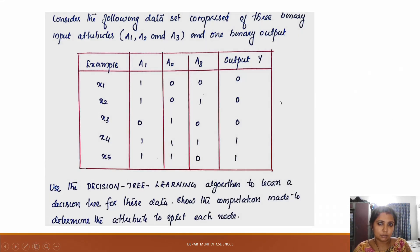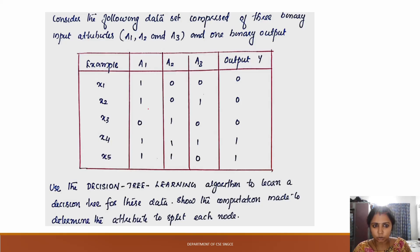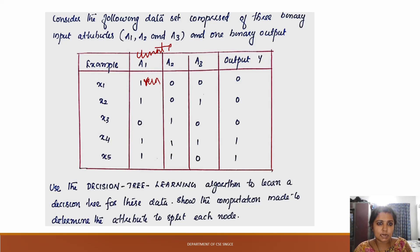So this is our problem. We have three inputs — two binary inputs, two values. We have different attributes: say rain, sunny, windy. Here are the three aspects.